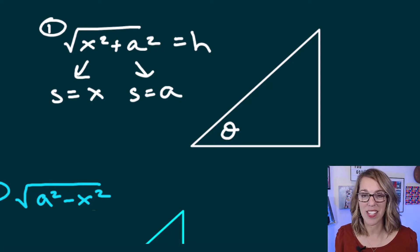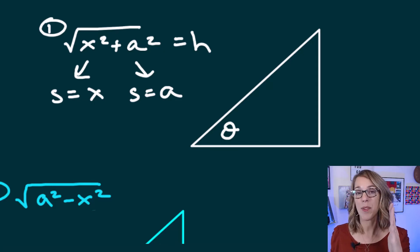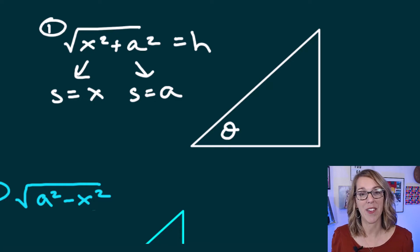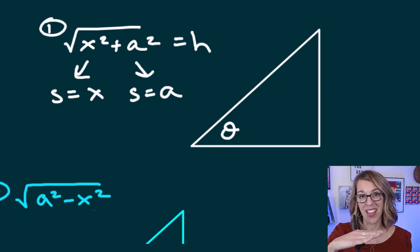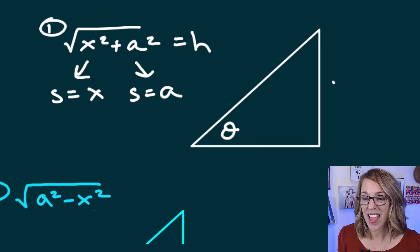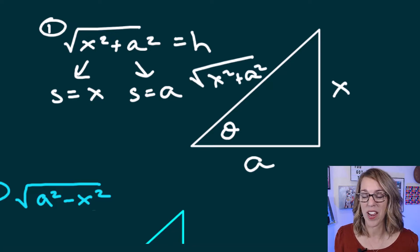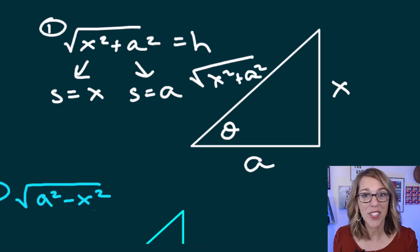Let's label each of these to be consistent with those trig sub formulas. If I've got an x, I'm going to put it on the vertical leg, and if I've got a constant — which is what a represents — that goes on the horizontal leg. So I've got side x here, side a here, and that leaves me with the square root of x squared plus a squared for the hypotenuse, which you can confirm with the Pythagorean theorem.